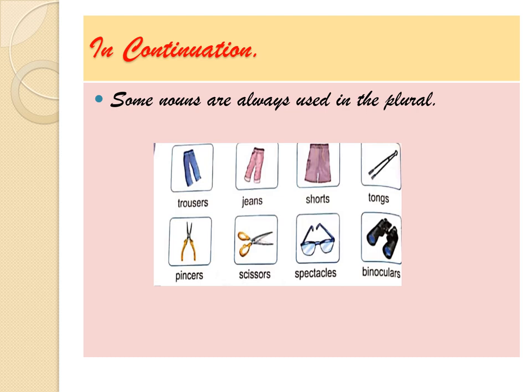Rule nine: some nouns are always used in the plural form. There are words which are always plural, like: trousers, jeans, shorts, tongs, fences, scissors, spectacles, and binoculars. These are always used in the plural form.